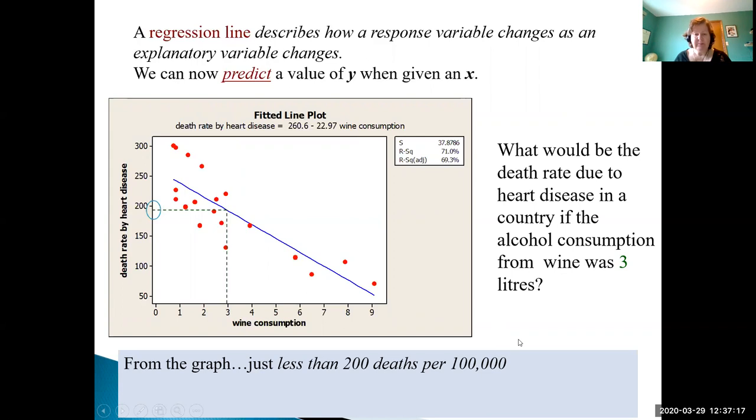There's two ways we can do this. We can just read it off the graph, so I can come down to 3 here for the wine consumption, go up to my blue line which is the best fit line, and then extrapolate over to the side and I get just under 200,000 deaths. Alternatively, we can use an exact method using the equation. We take our value of interest, 3 liters, and plug it into our equation: 260.6 minus 22.97 times 3, and we get exactly 191.66 deaths per 100,000 people.